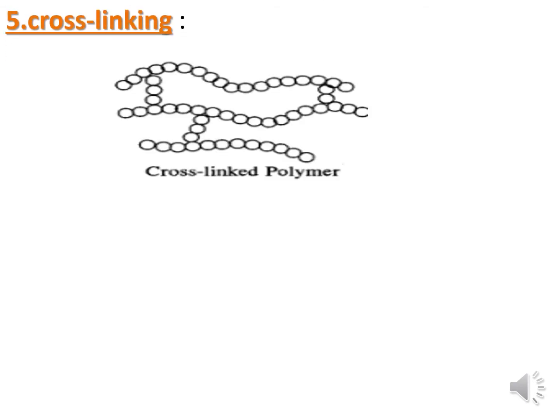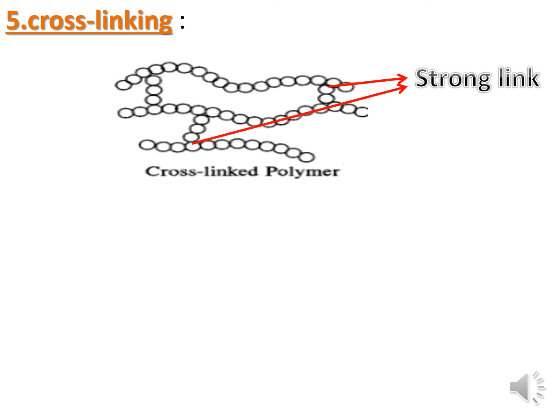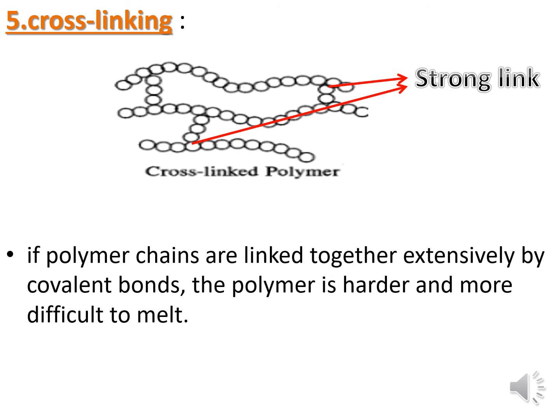Fifth, cross-linking: in cross-linked polymers, monomers are linked in a three-dimensional network. The monomers contain strong covalent bonds, so these polymers are brittle and hard. If polymer chains are linked together extensively by covalent bonds, the polymer is harder and more difficult to melt.